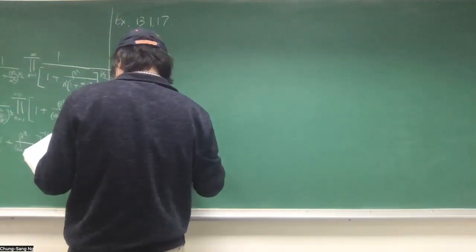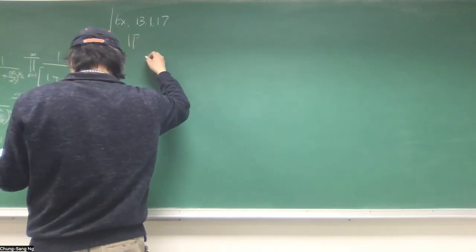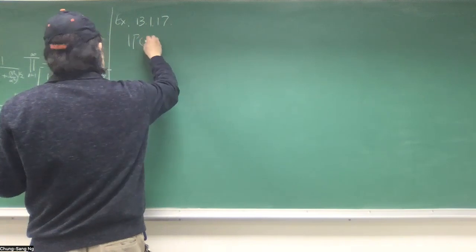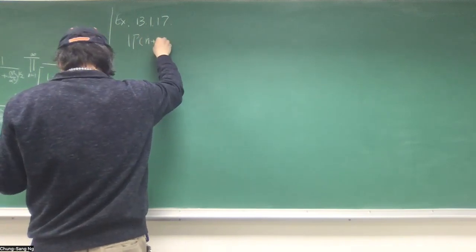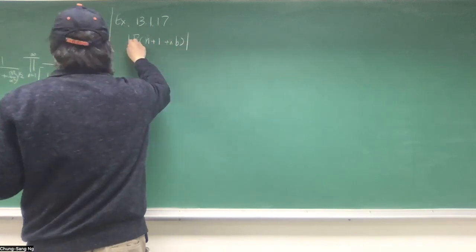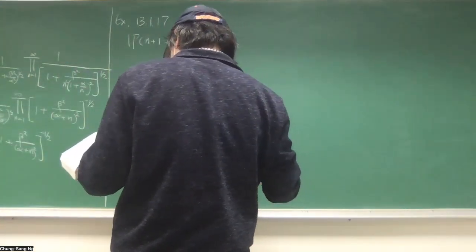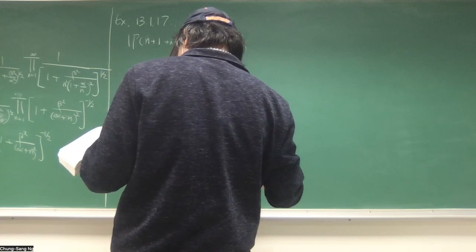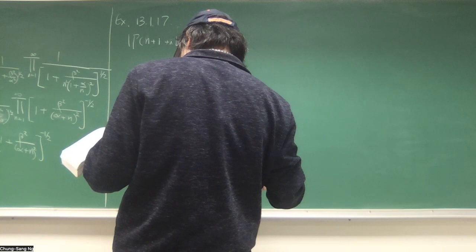This is to show this gamma, this is N plus 1 plus IB. This looks like it's of the form of that one, but the right hand side doesn't seem to work out, and it's not obviously going to work out.